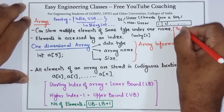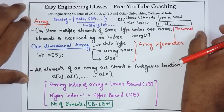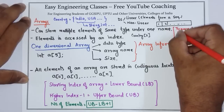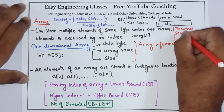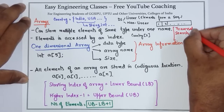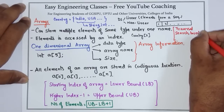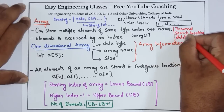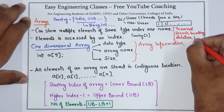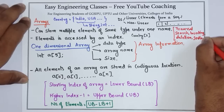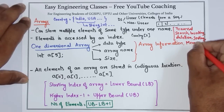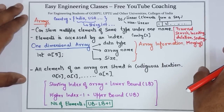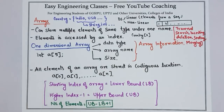The basic operations include: traversal of an array — which means to process each and every element of the array; searching an array for a particular element; inserting an item in an array; deletion from the array; sorting an array; and finally you can also merge two arrays using a merge operation. These are some of the operations that can be performed on an array data structure.